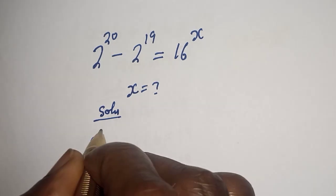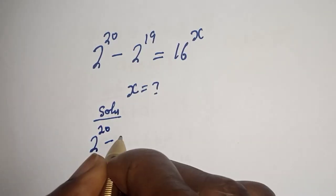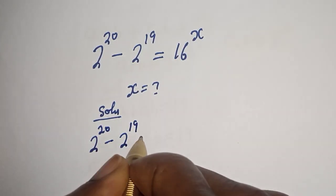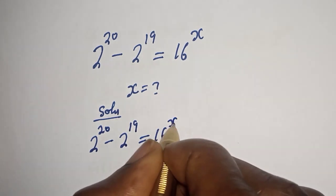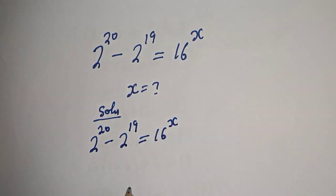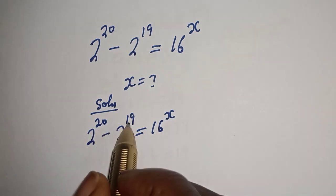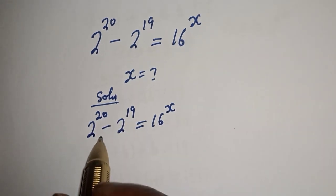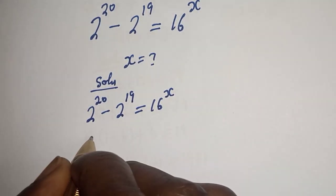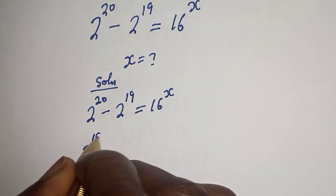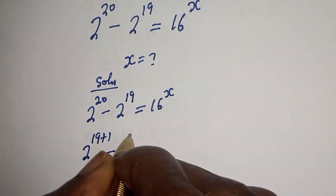We have the given equation: 2 raised to power 20 minus 2 raised to power 19 is equal to 16 raised to power x. Then 2 raised to power 20 can be written as 2 raised to power 19 plus 1, minus 2 raised to power 19, is equal to 16 raised to power x.